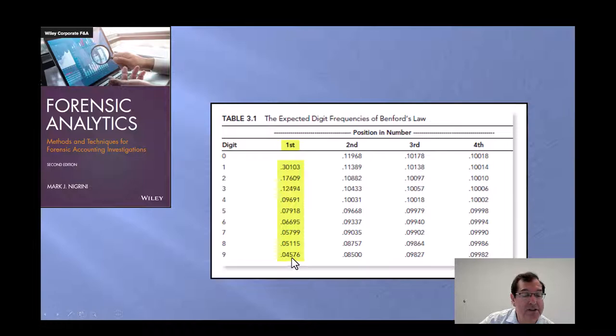0 cannot be a first digit, and so in this case, the first digit here would be the 7 and the 6 and so on. 0 can be a second digit, and for the second digit, it is less skewed. We go from 12% down to 8.5%.